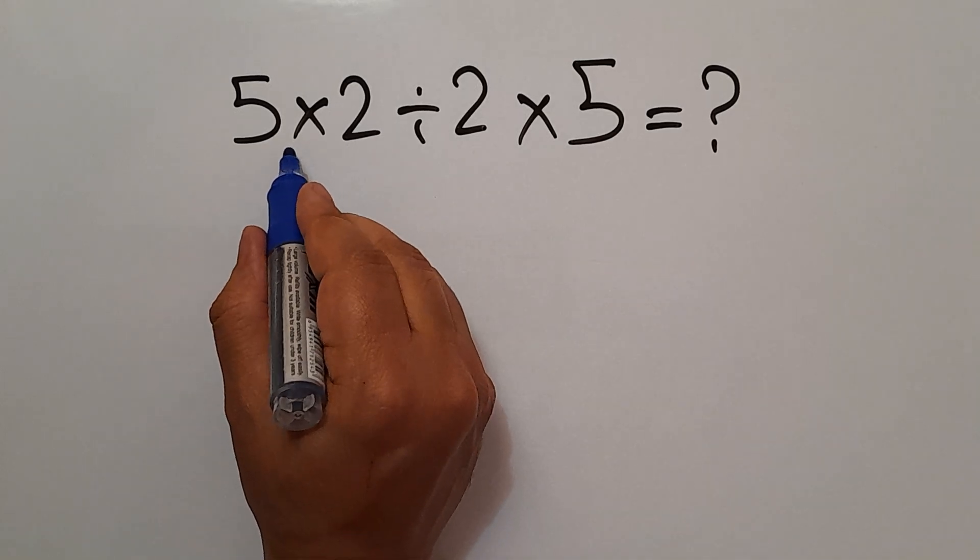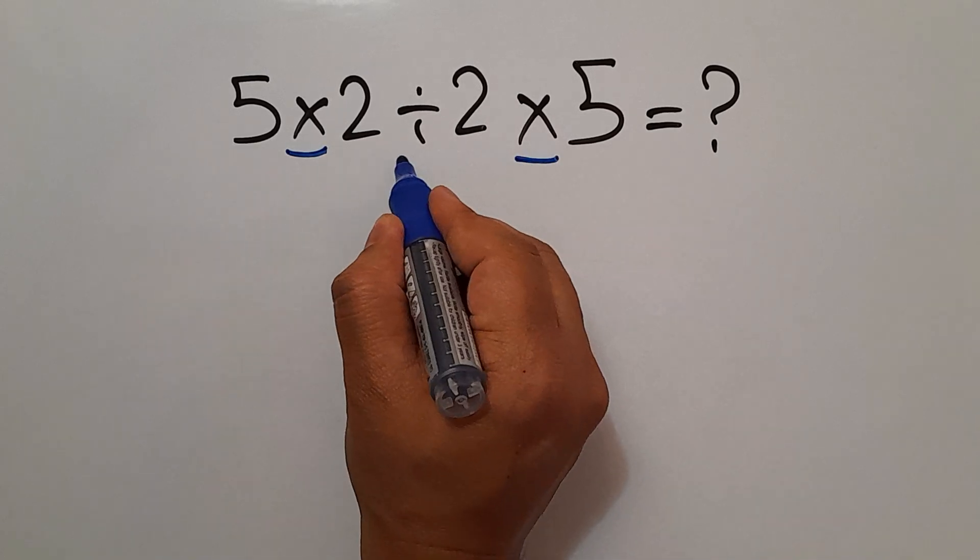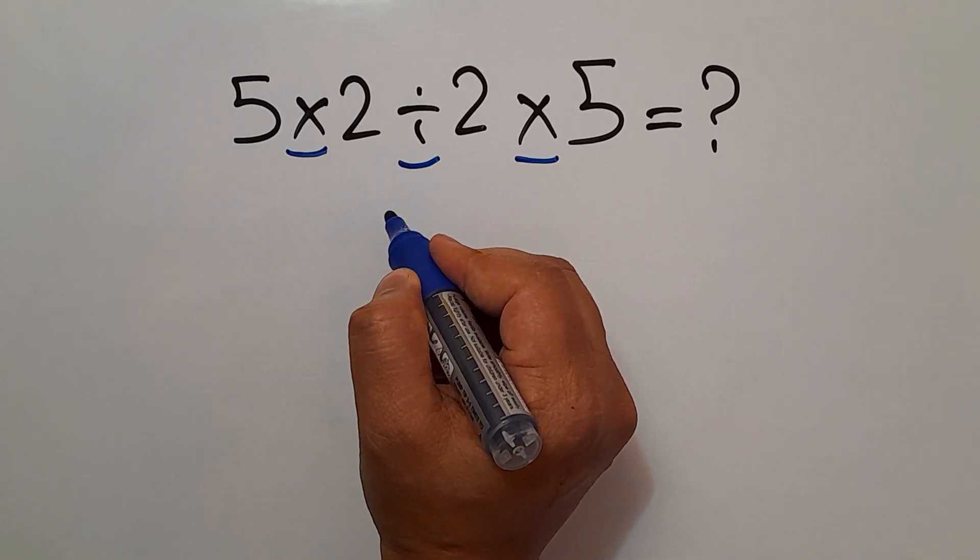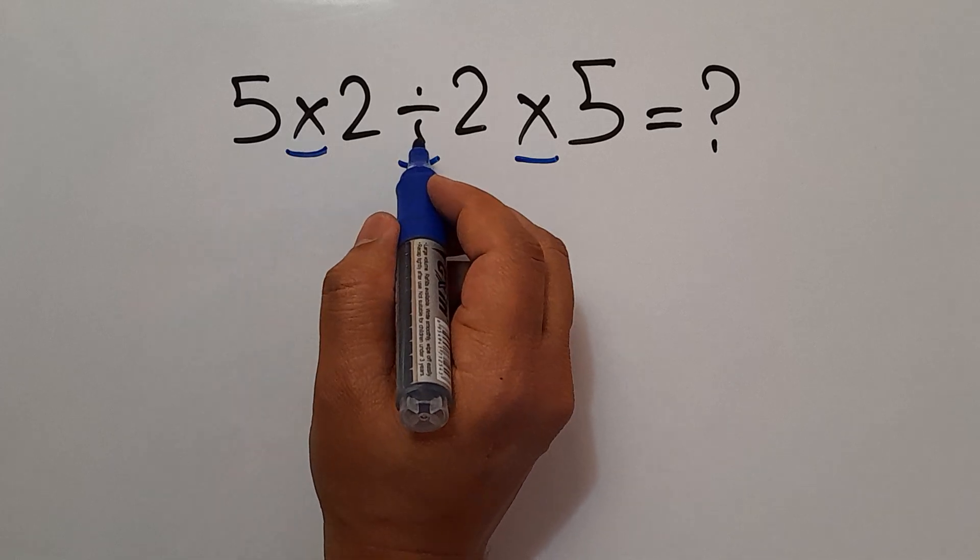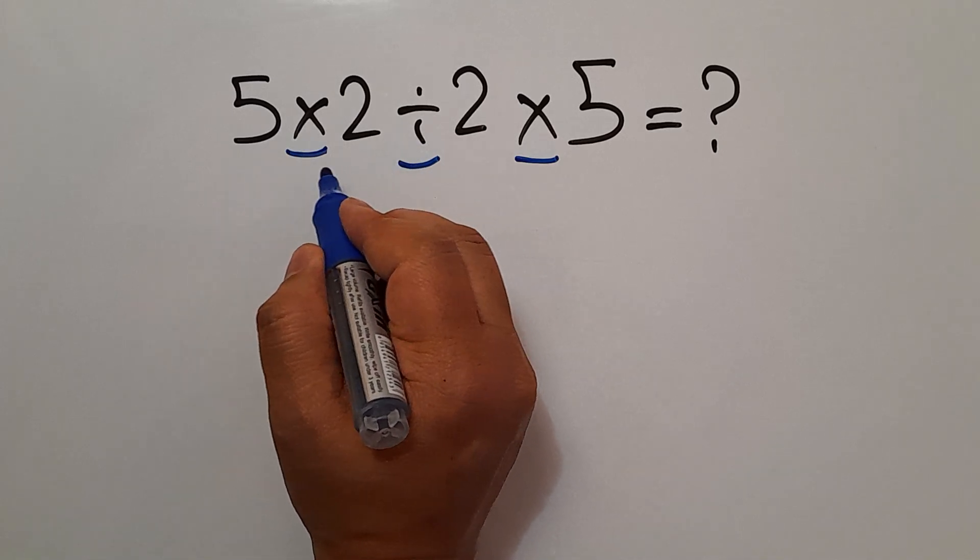We have here two multiplications and one division. As we know, multiplication and division have equal priority and we have to work from left to right.